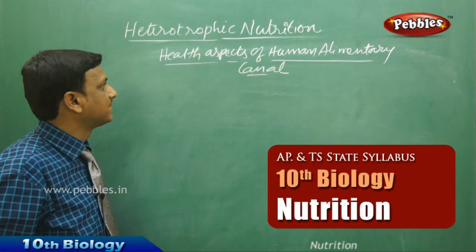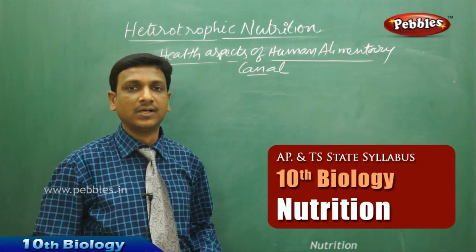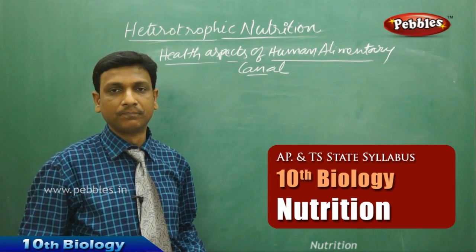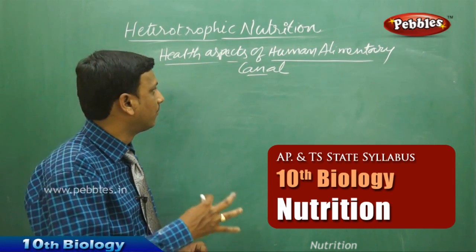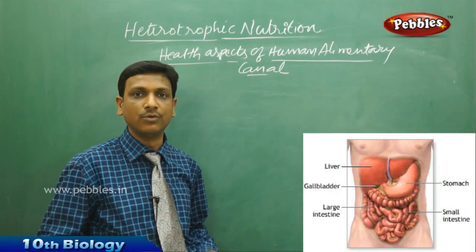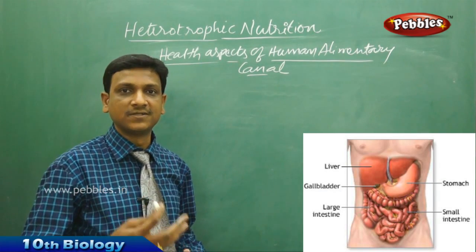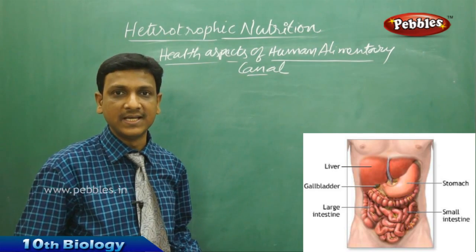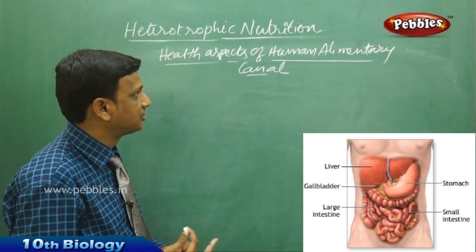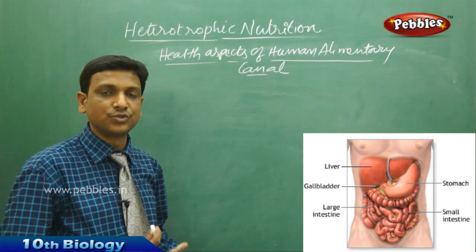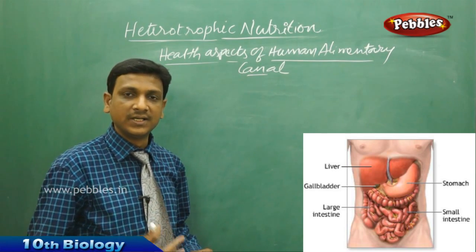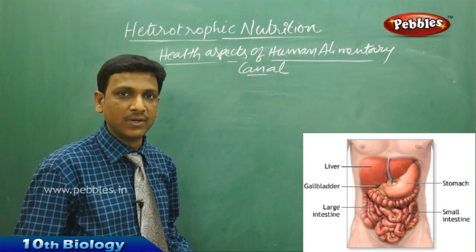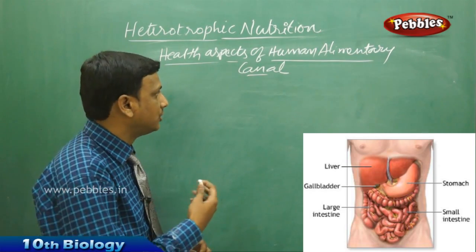Now let us look at the health aspects of the human alimentary canal. Our alimentary canal works remarkably well and does a wonderful job of digesting food. We eat different kinds of food — sometimes spicy, sometimes alkaline — and it carries out digestion by secreting juices to maintain pH balance and enzymes to digest food and make nutrients available for our body.